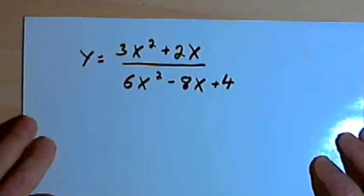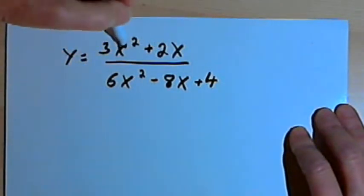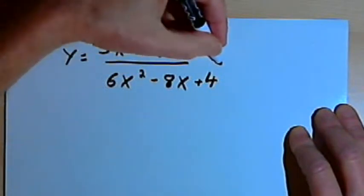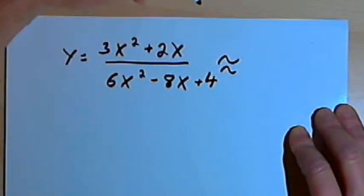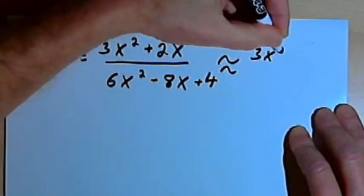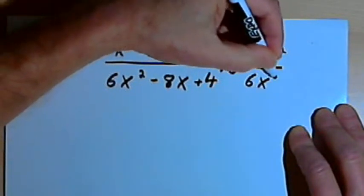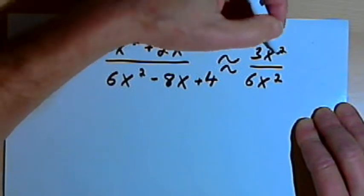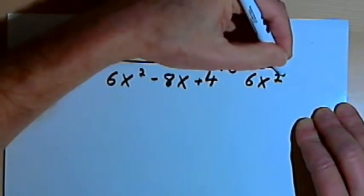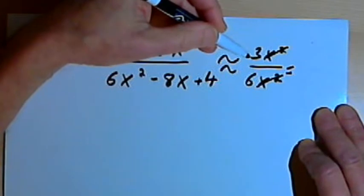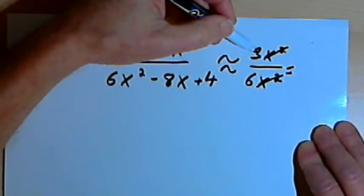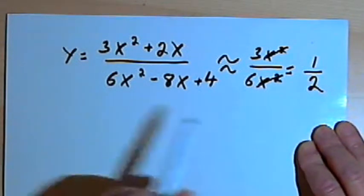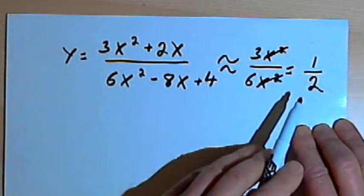Here's another one where we're looking at the lead coefficients: y equals 3x squared plus 2x over 6x squared minus 8x plus 4. That will equal approximately 3x squared over 6x squared. The degrees are the same, so I can cross out the x squared in both terms. Don't forget to reduce your fraction — I've got 3 over 6, which reduces to 1 half. So my horizontal asymptote will be at y equals 1 half.